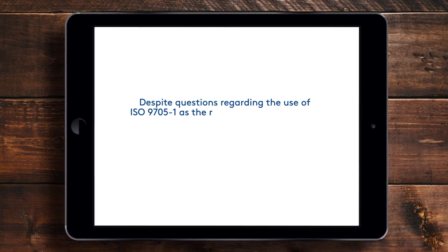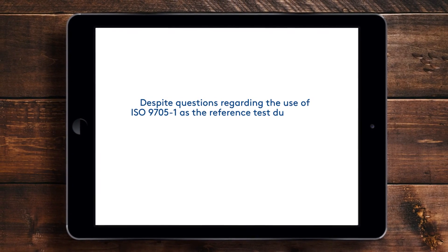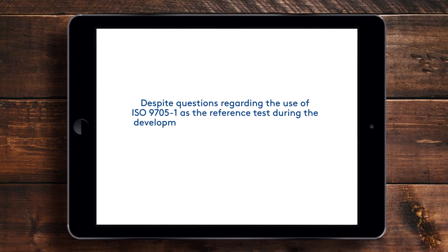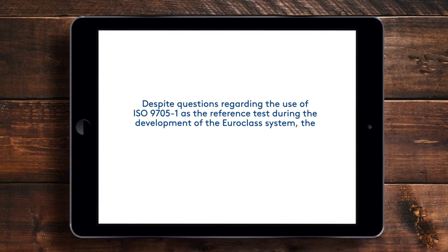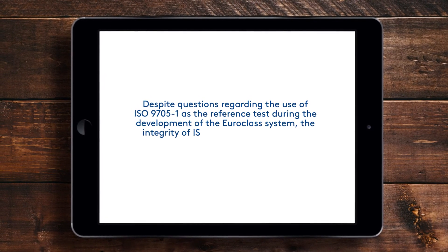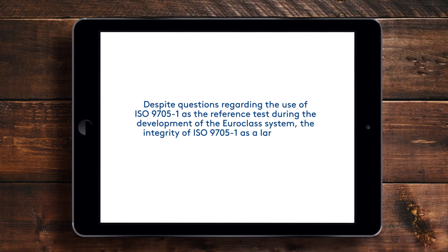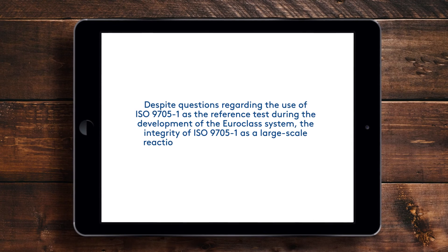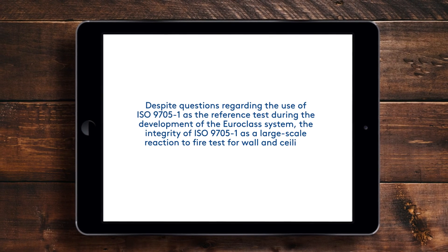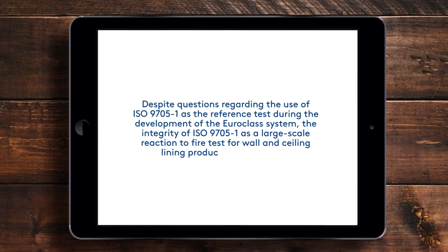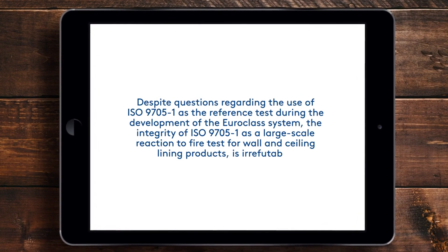To account for this, the Euro Class system allows products to be assessed in application as part of a complete build-up. Despite questions regarding the use of ISO 9705 Part 1 as the reference test during the development of the Euro Class system, the integrity of ISO 9705 Part 1 as a large-scale reaction to fire test for wall and ceiling lining products is irrefutable.